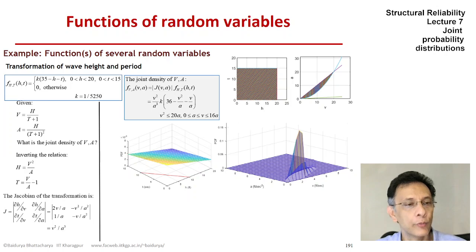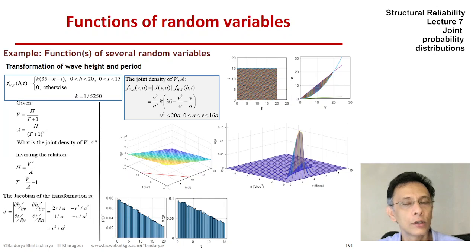And we could also, from the joint density function, just to see what things look like, we can find out what the marginal densities of h and t are. You can just integrate the joint density and get these, and they are basically decreasing linear functions. And that's what we get. These plots are obtained by simulation.